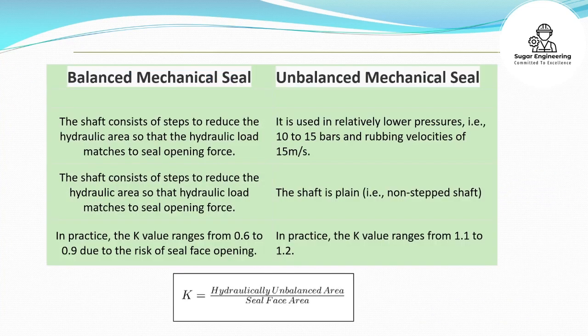Balanced mechanical seal: The shaft consists of steps to reduce the hydraulic area so that the hydraulic load matches the seal opening force. In practice, the K value ranges from 0.6 to 0.9 due to the risk of seal face opening. Unbalanced mechanical seal: It is used in relatively lower pressures, i.e., 10 to 15 bars, and rubbing velocities of 15 meters per second. The shaft is plain, i.e., a non-stepped shaft. In practice, the K value ranges from 1.1 to 1.2.